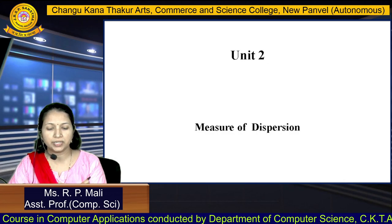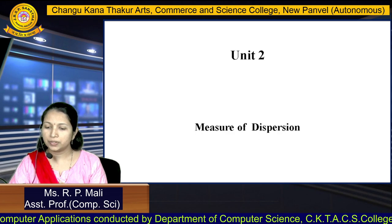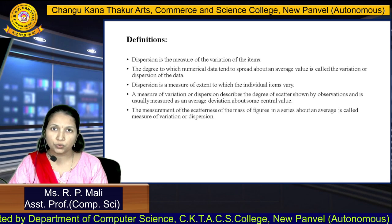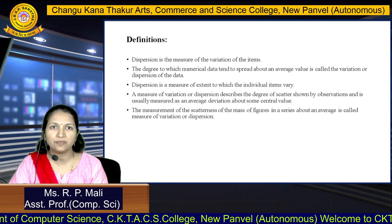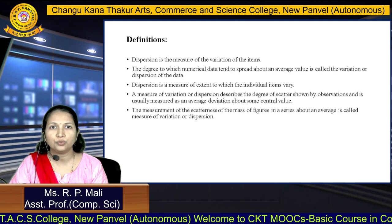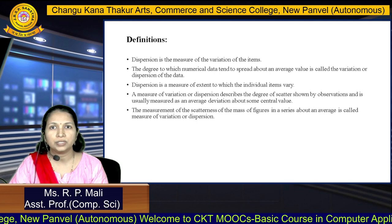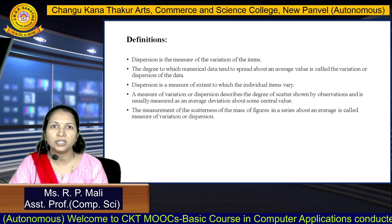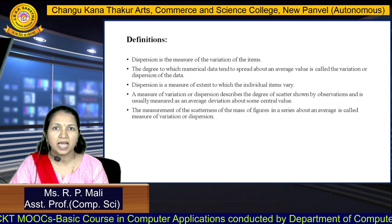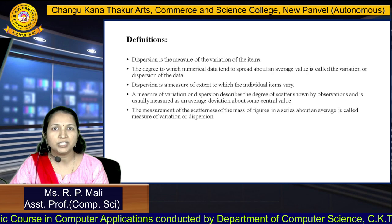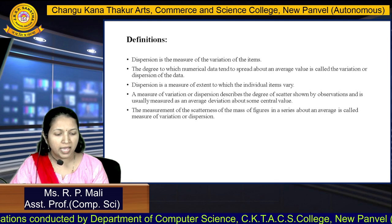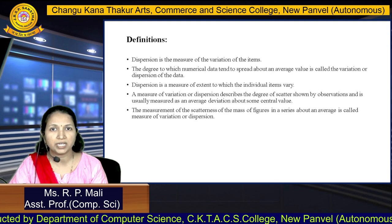Hello friends, today we are going to see unit number 2 - measures of dispersion. Dispersion is a measure of the variation of the item. The degree to which the numerical data tends to spread above an average value is called the variation and the dispersion of the data. Dispersion is a measure of the extent to which individual items vary, and is usually measured as an average deviation above some central value.